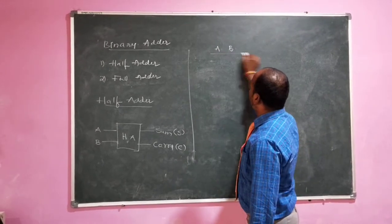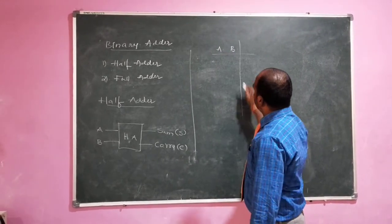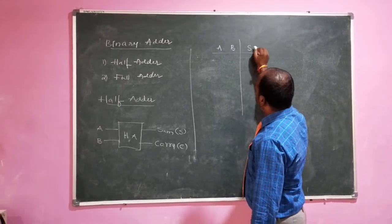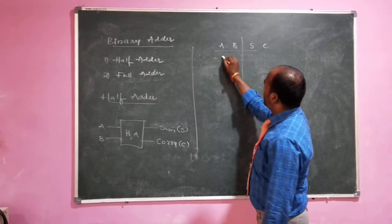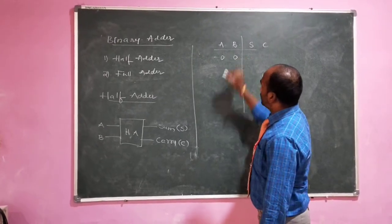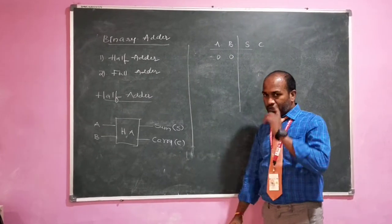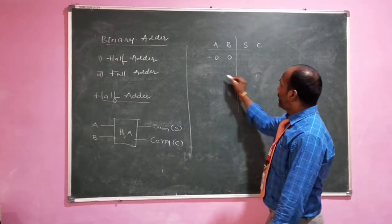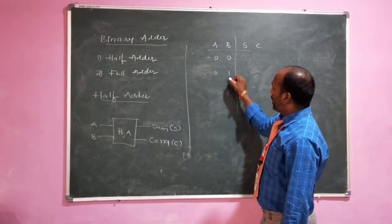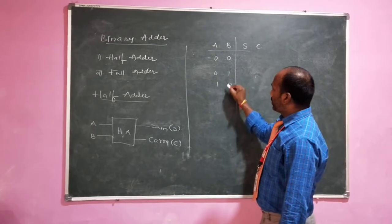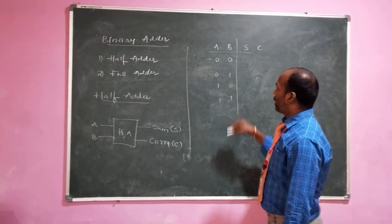The half adder produces two outputs: sum and carry. Since the structure takes two bits of input, there are four combinations that A and B can take: 0,0 — 0,1 — 1,0 — and 1,1.